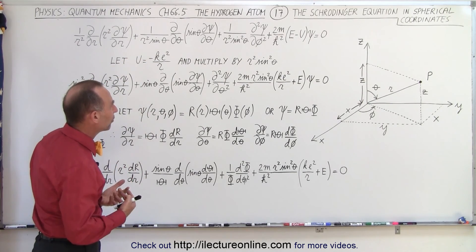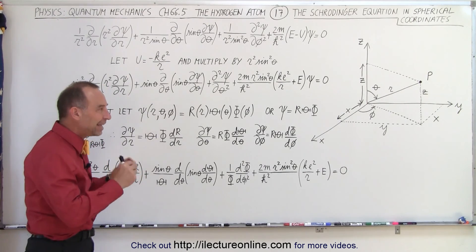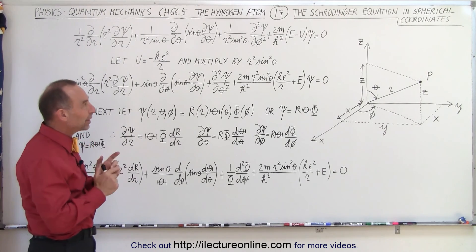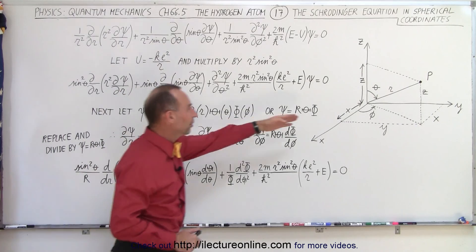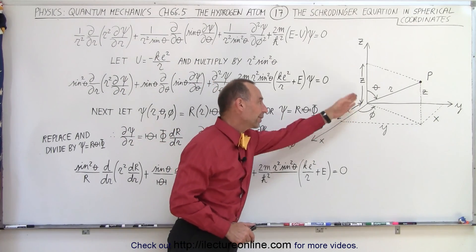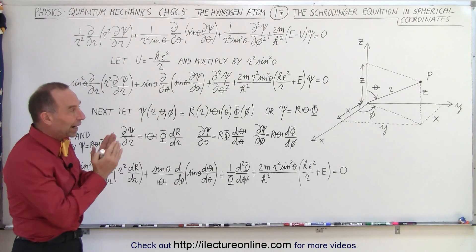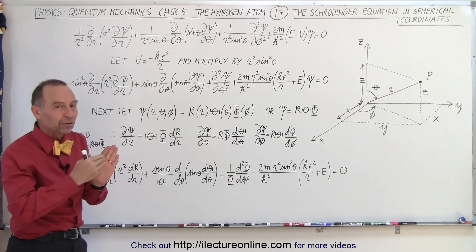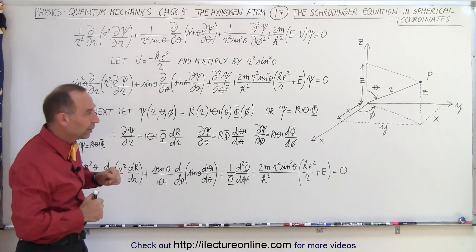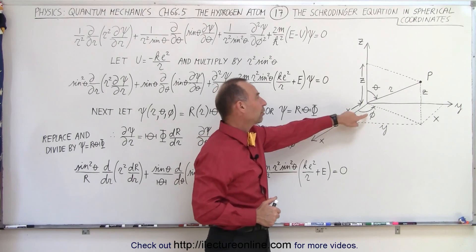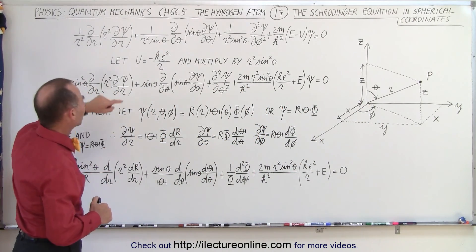And of course that's in three dimensions. What we need to do is put it into a format that's easier to work with mathematically. Once we convert from x, y, z to r, theta, and phi, we can realize that there's a possibility of writing the Schrödinger equation as the product of three separate equations — one that's only a function of r, one that's only a function of phi, and one that's only a function of theta.